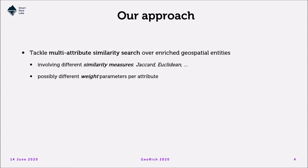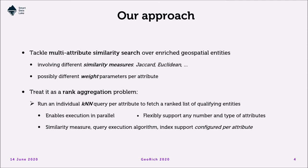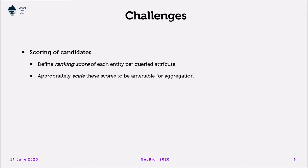We will give an overview of our work towards addressing multi-attribute similarity search over enriched geospatial entities. Note that different similarity measures may be applied per attribute — Jaccard similarity for keywords, Euclidean distances for locations, and so on — and different weight parameters per attribute can calibrate the final rankings. We treat this as a rank aggregation problem in two steps. The first step is to run individual KNN queries per attribute and get a ranked list of qualifying entities per attribute. This enables parallel execution, flexible support for any number of attribute types, and per-attribute configuration of similarity measure, query execution algorithm, and index support. The second step aggregates candidates from those individual lists and yields the final results.